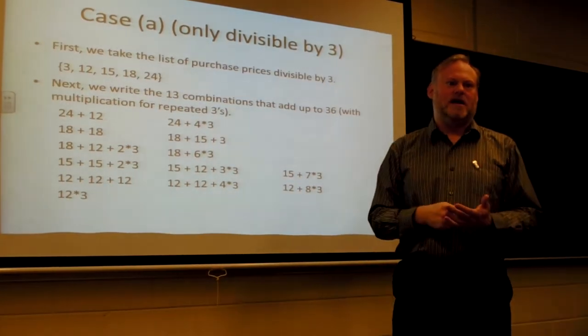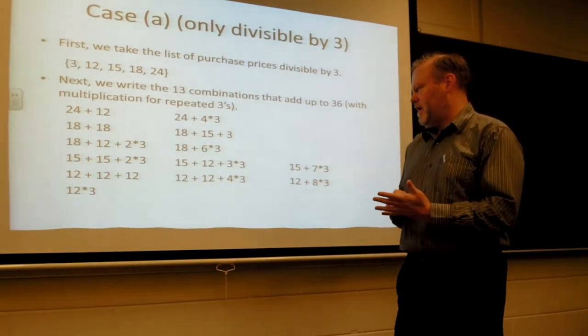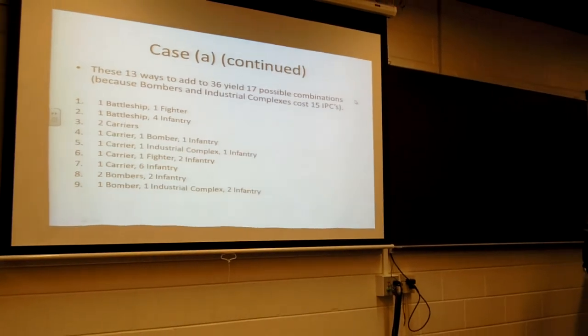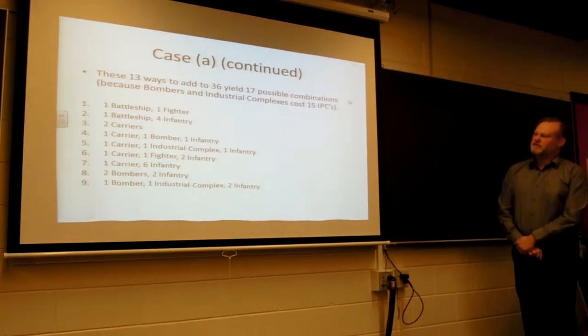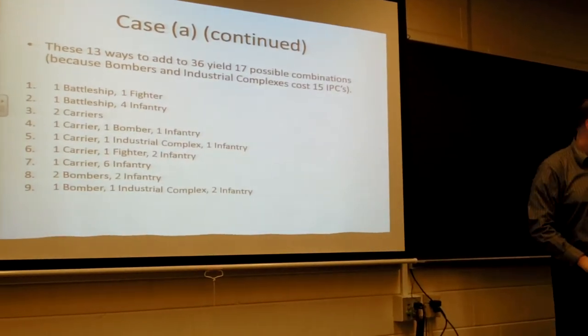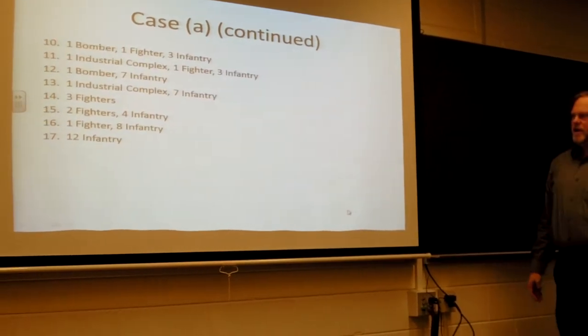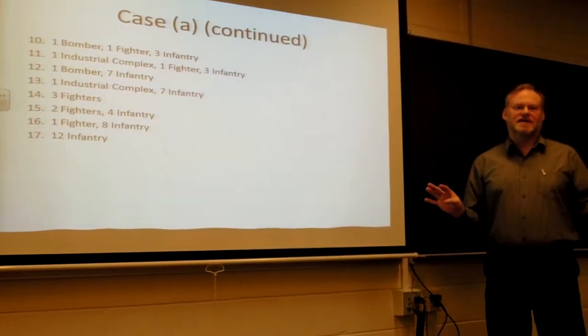Now that's going to lead to 17 combinations, because remember, 15 IPCs buys a bomber and an industrial complex. So here are the 17 possibilities. There's the first nine, and then here are the remaining eight. All of those cases are covered.